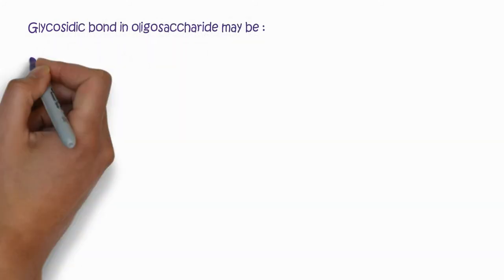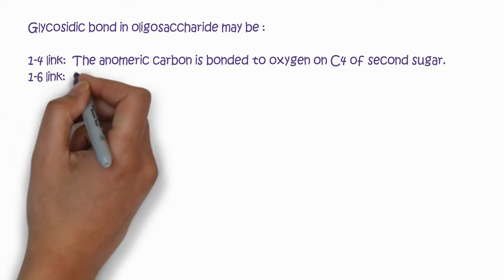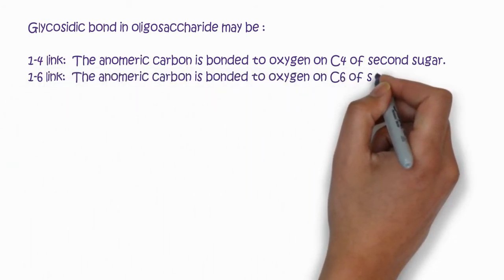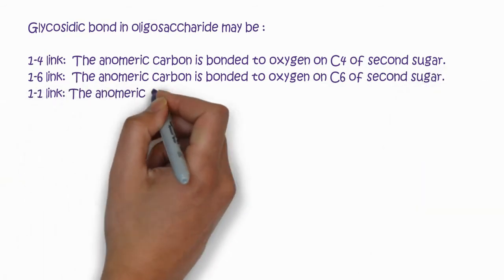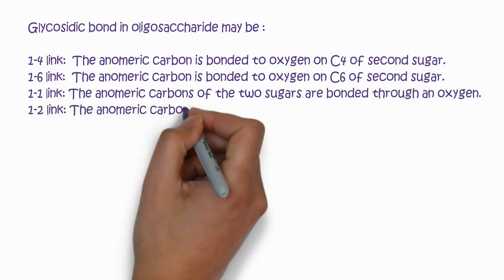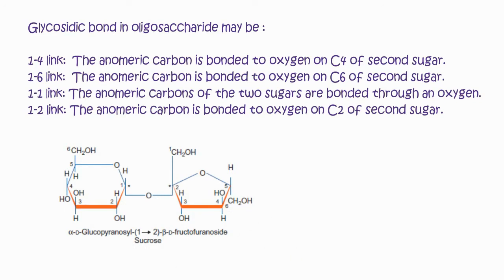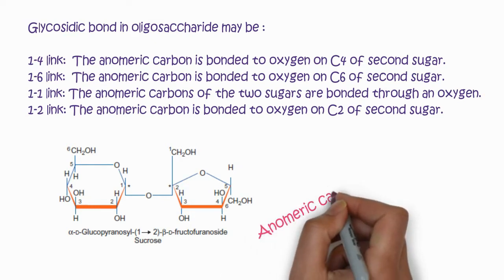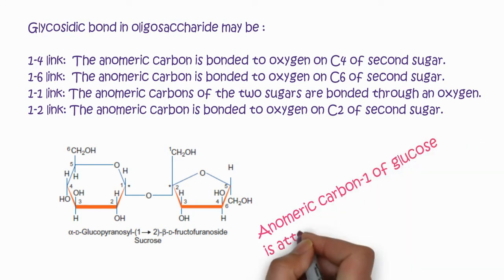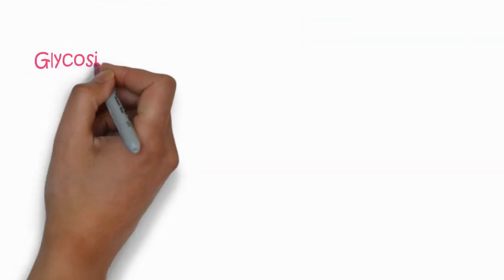A glycosidic bond in oligosaccharides may be 1-4 linked, where the anomeric carbon is bonded to oxygen and C-4 of the second sugar, or 1-6 linked, where the anomeric carbon bonds to the oxygen of C-6. In a 1-1 linkage, the anomeric carbons of the two sugars are both bonded to the oxygen. In a 1-2 linkage — as seen in sucrose — the anomeric carbon of glucose is bonded to C-2 of fructose, forming a 1-2 glycosidic bond.